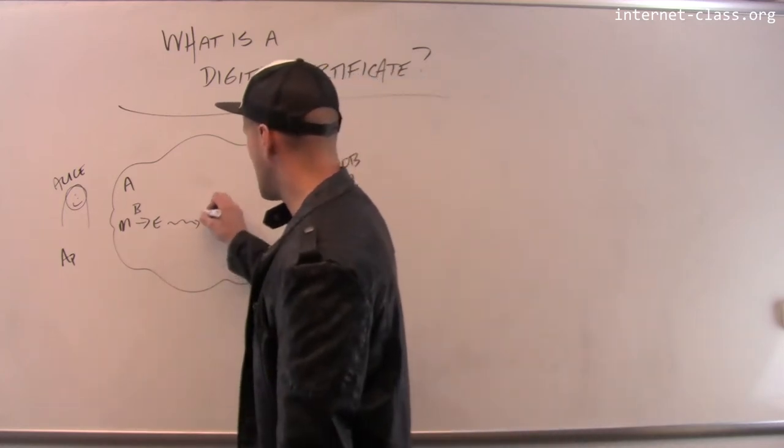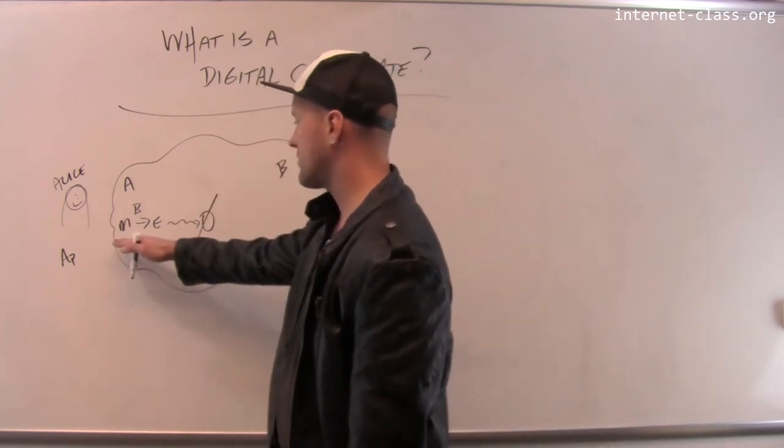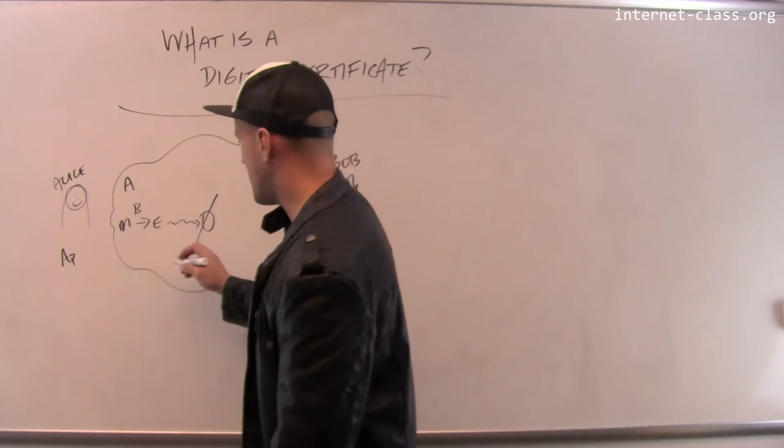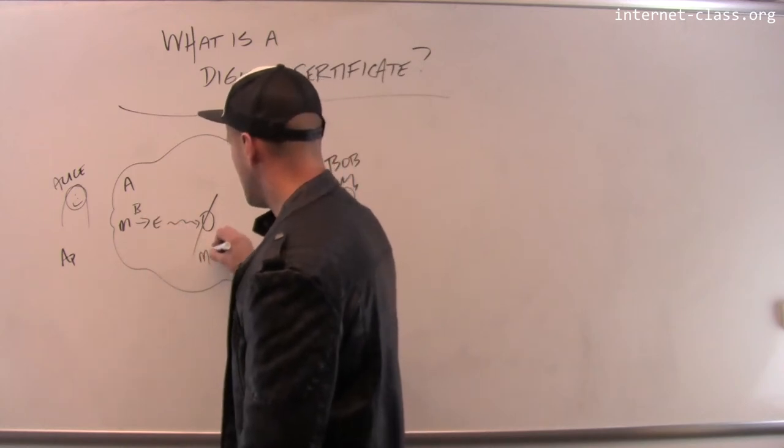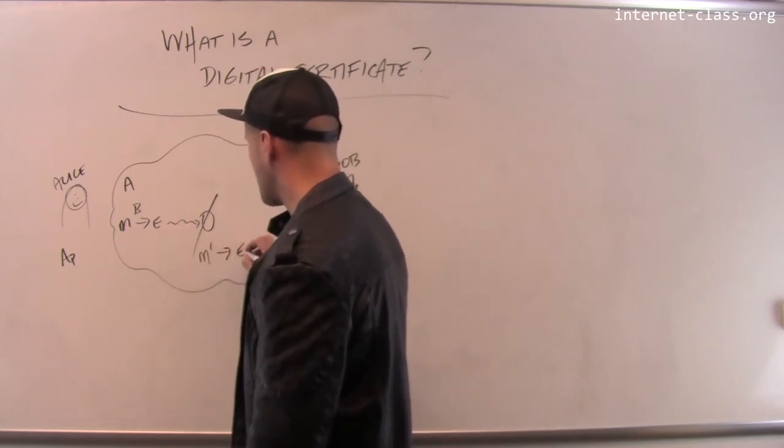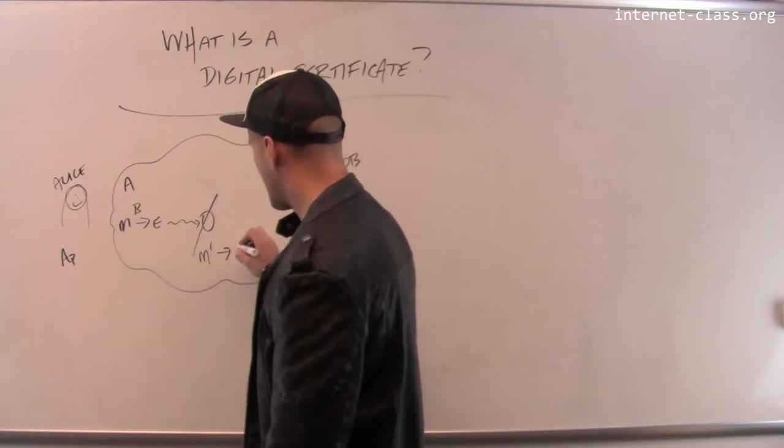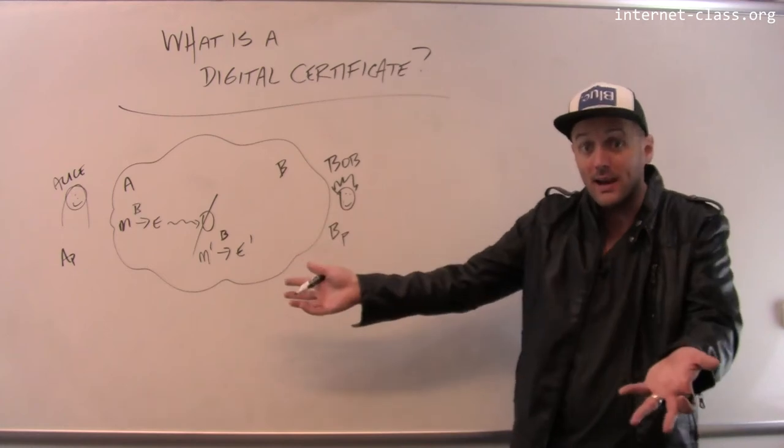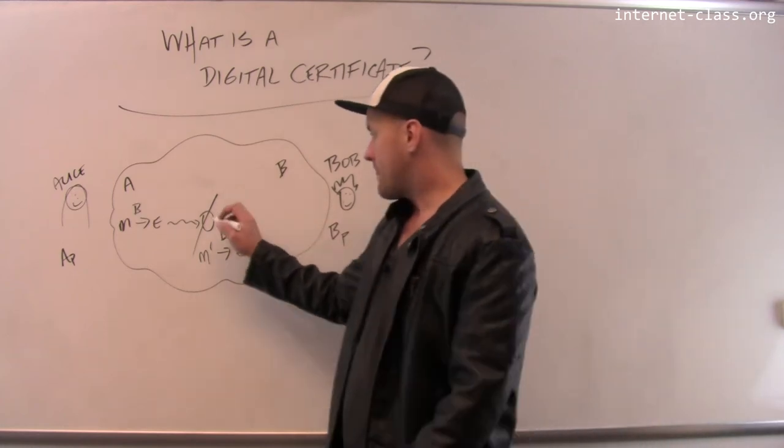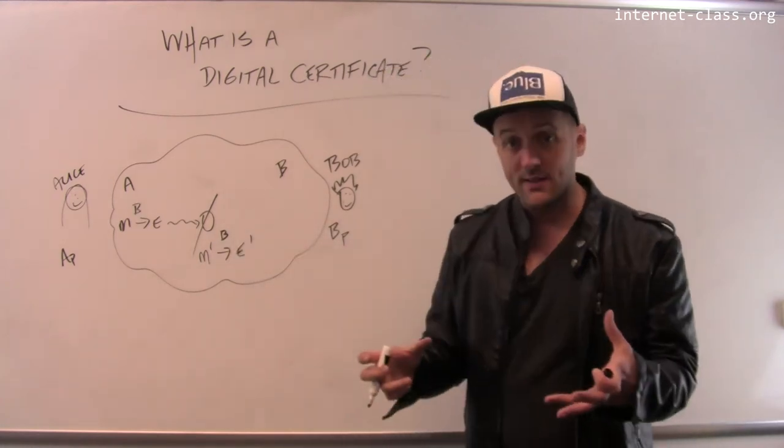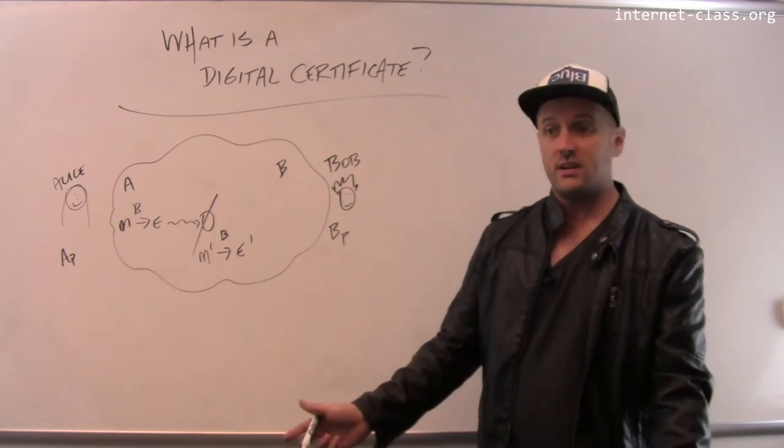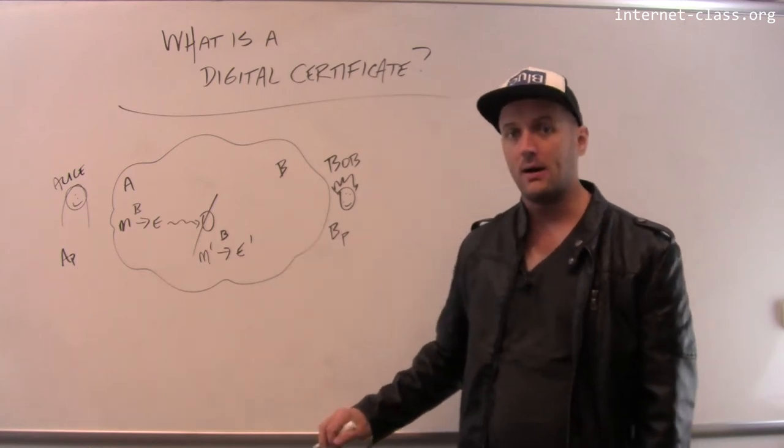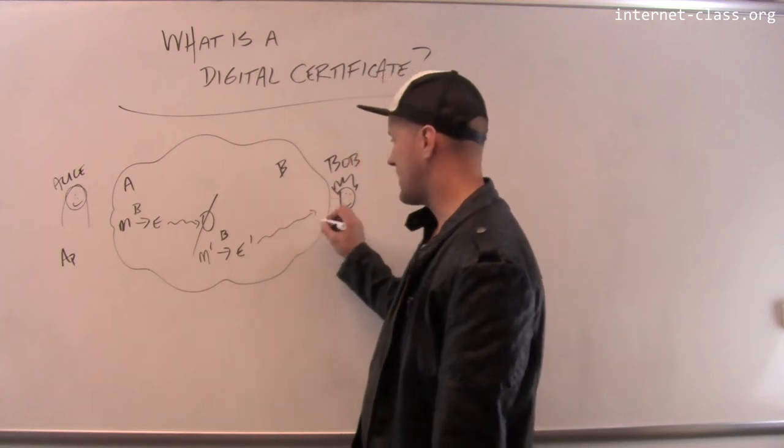So what that malicious party is going to do is remove this message, we'll call this M, and then create a new message M prime. Now here's the problem: it can encrypt that message using Bob's public key because Bob's public key is public. Everybody can use it. So this adversary is going to take Alice's message, get rid of it, create a new message to Bob that's completely different, and send that message on its way.